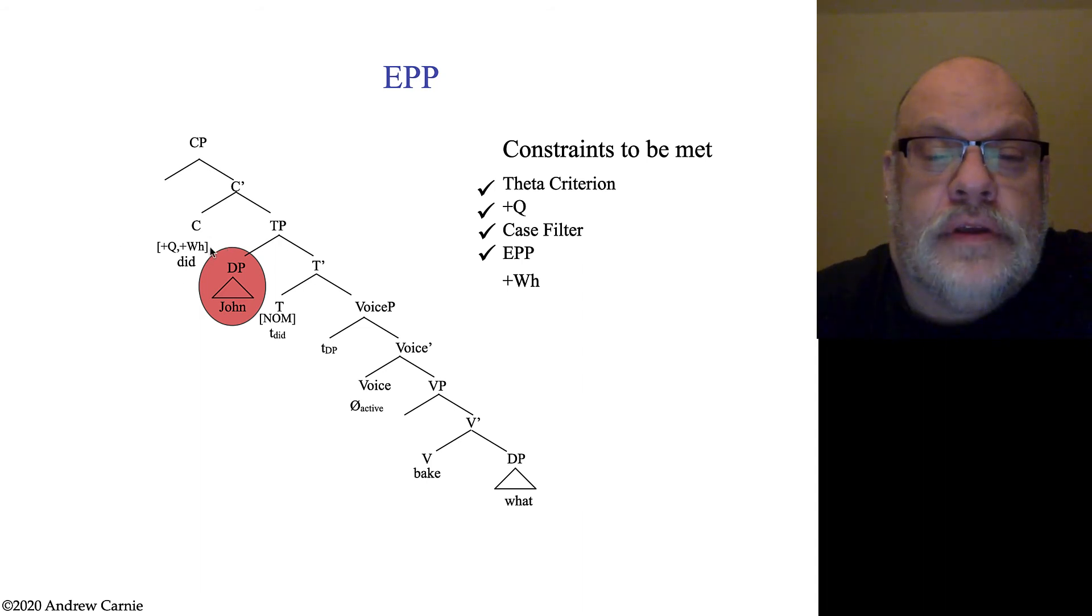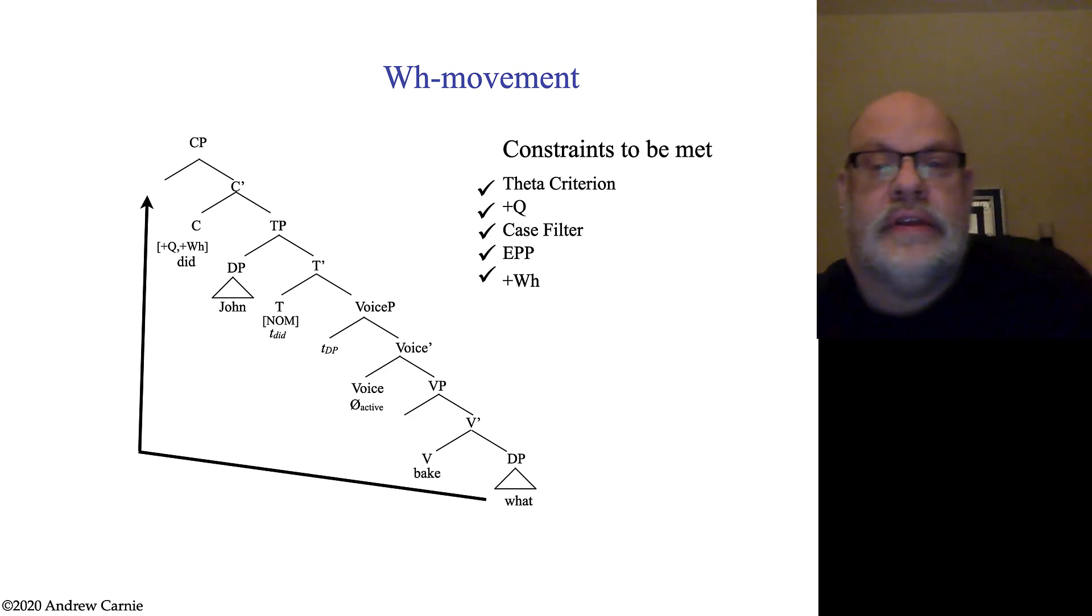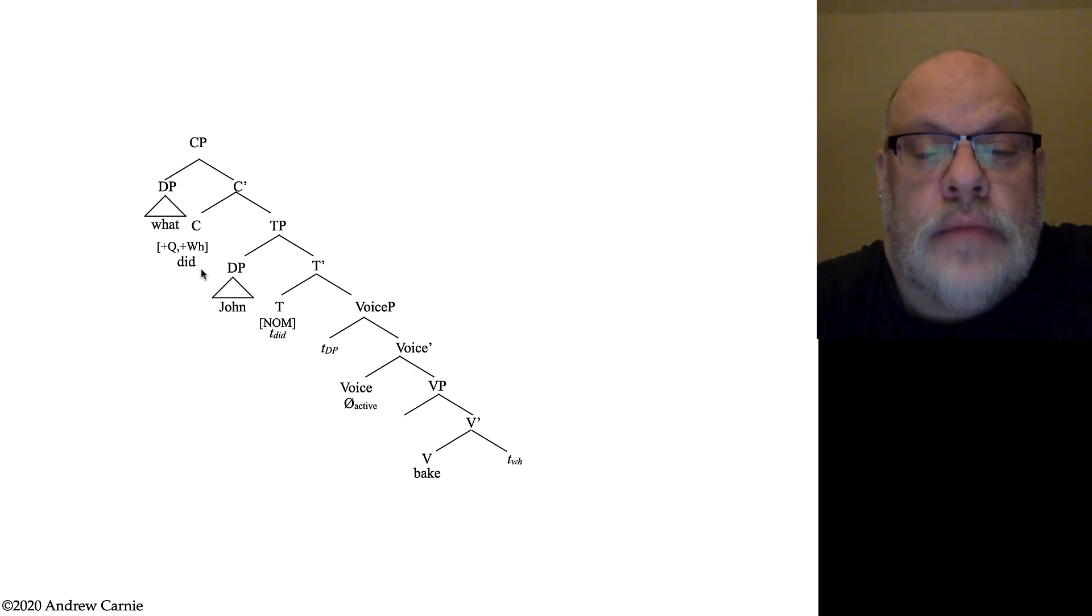That condition is different than the case filter because sometimes it's not this argument that moves into this position, it's another one. So, we've met the EPP. The last thing we have to do is meet the requirements of this plus WH feature. Because this is a WH question. And luckily we have a WH word down here. So, we can just move that DP up into the specifier of this CP. And that will meet the requirements of this WH element. Because this DP will be in the specifier of this WH complementizer. So, that feature is met. This is the derivation of the sentence what did John bake?